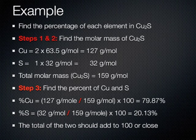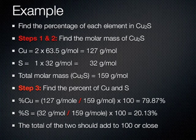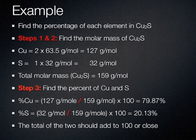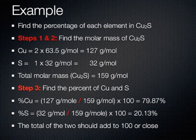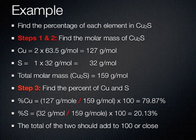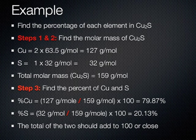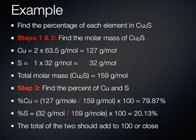Okay, let's do an example. We're going to find the percentage of each element in copper sulfide. We're going to do steps one and two together. We're going to find the molar mass of copper sulfide, and at the same time find out how much copper and how much sulfur contributes to the total.